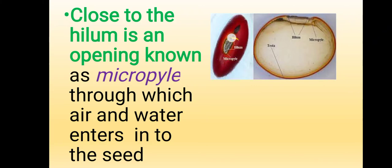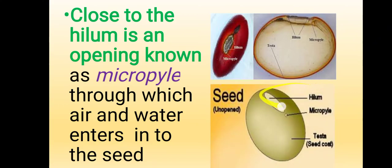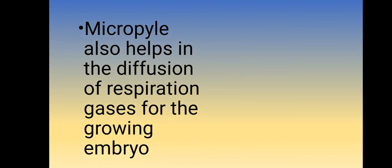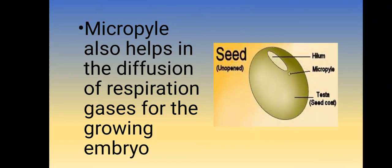Close to the hilum is an opening known as the micropyle, through which air and water enter into the seed. The main function of the micropyle is to provide suitable gases for respiration of the growing embryo.